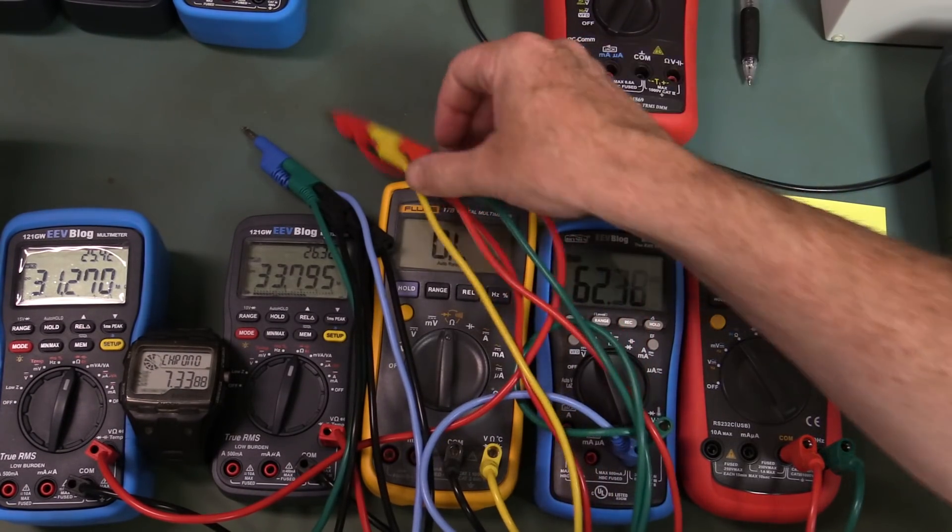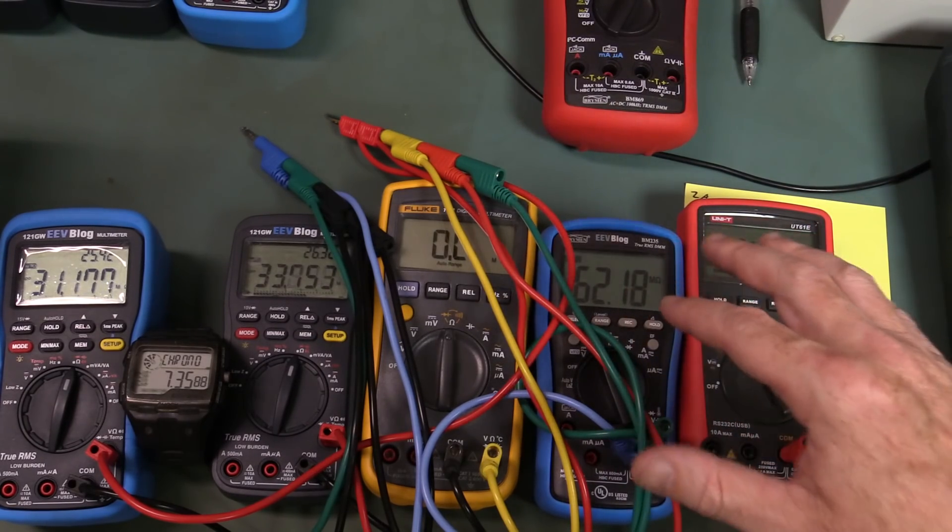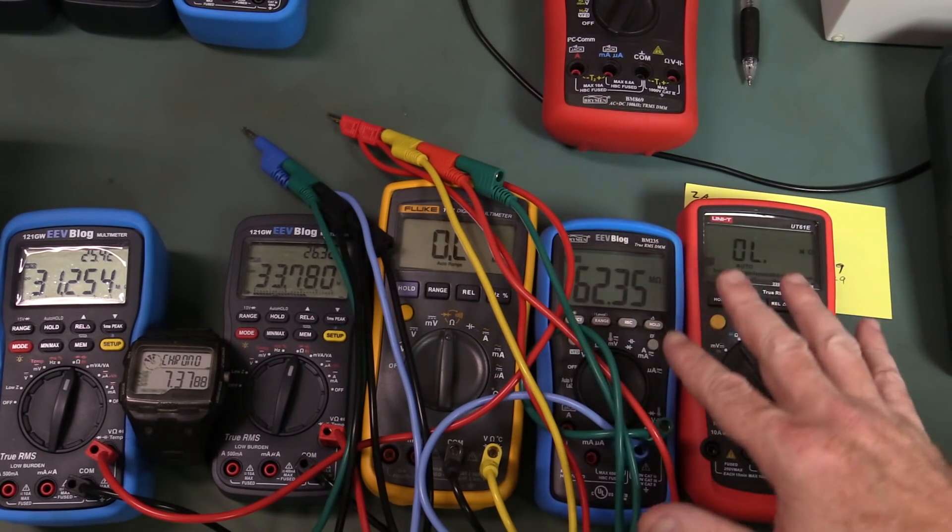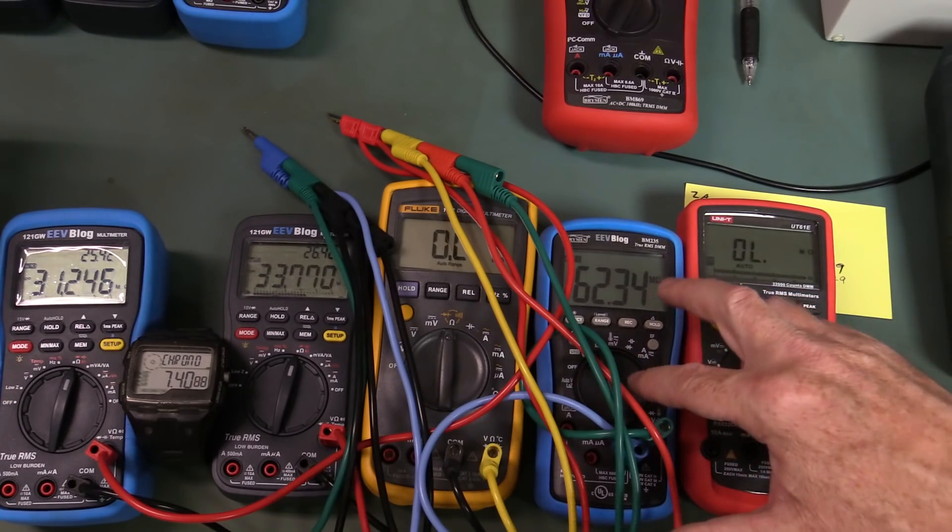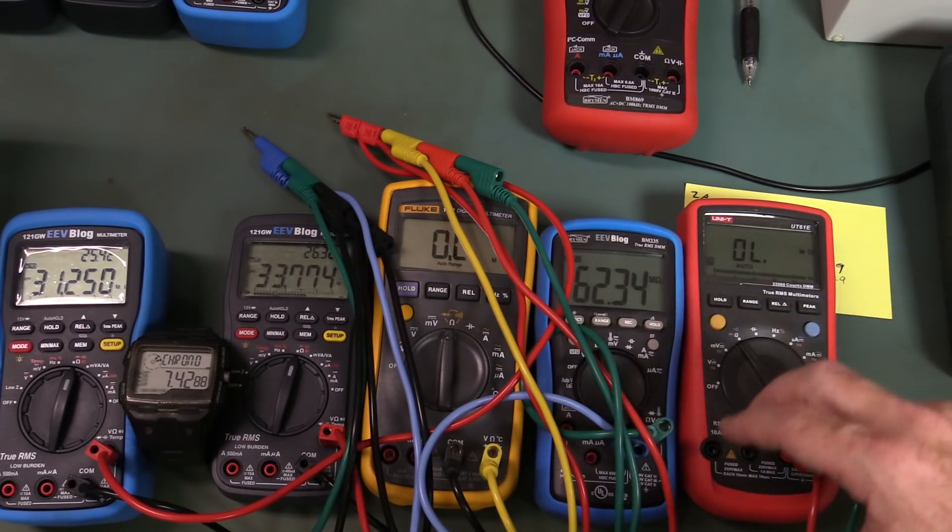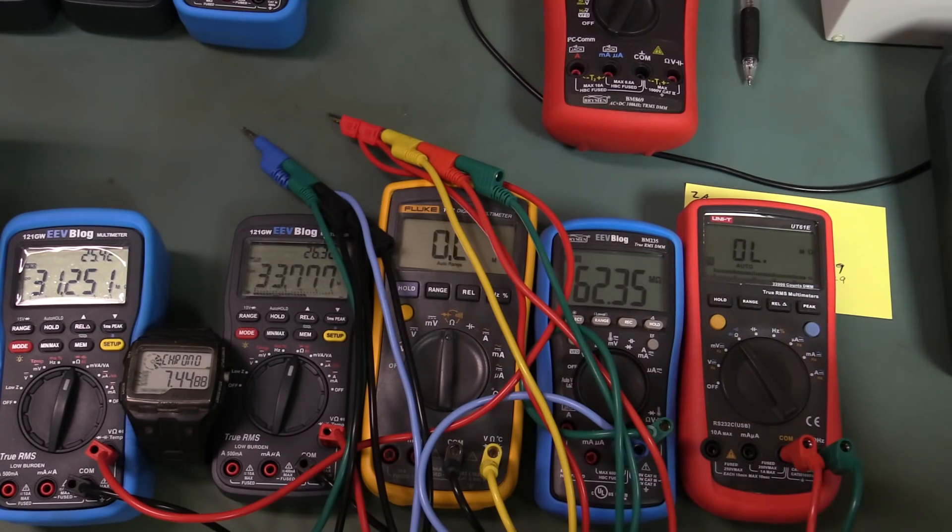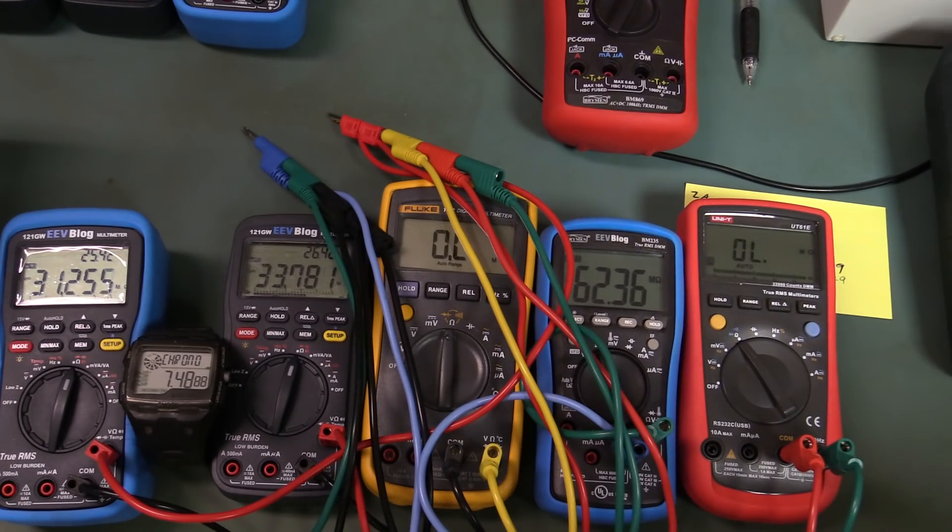If that's your overriding requirement, get a deliberately fast one for whatever reason. Bryman's actually used their own custom chipset, for example I'm led to believe, so however they've implemented that. I don't know what chipset's inside the UT61E. I think it's just one of the off-the-shelf ones.